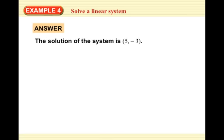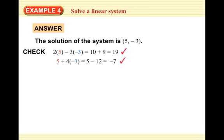Now let's look at a word problem. Before we look at the word problem, the 5, negative 3, you can check by plugging into both equations and making sure you get a true statement. 2x minus 3y equals 19. We're going to have 2 times 5 minus 3 times negative 3. So 10 minus negative 9, so 10 plus 9 is 19. And so 19 equals 19, so we're good to go. And then we're going to plug in the 5 and the negative 3 into x plus 4y and hopefully we'll get negative 7. So 5 plus 4 times negative 3, so that's 5 minus 12 which is negative 7. So the solution works in both equations.